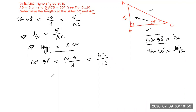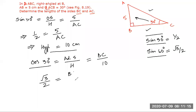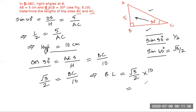Cos 30 and sine 60 are complementary, so they have the same value: √3/2. Therefore, √3/2 equals BC by 10. From here, BC equals (√3/2) times 10, which is 5√3. You can also give the answer in decimal form. We have done both parts of the question.